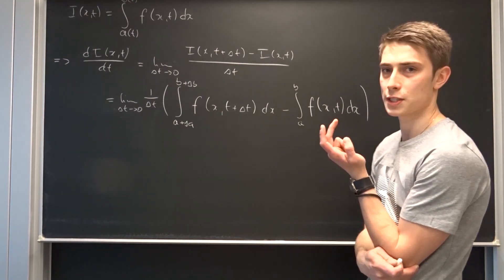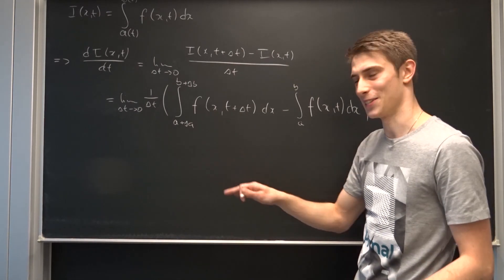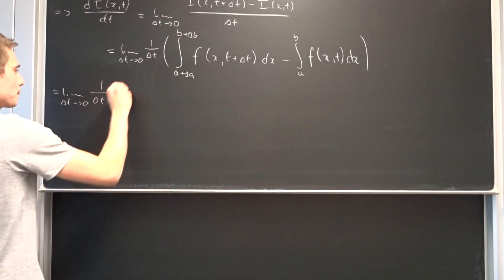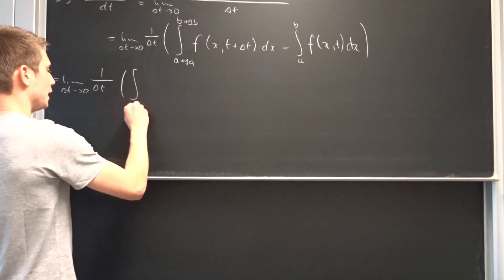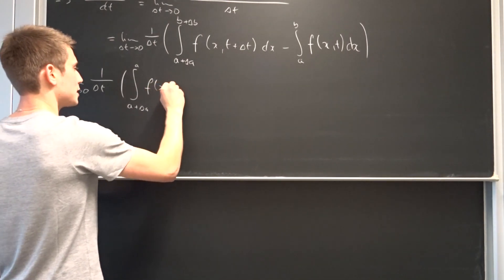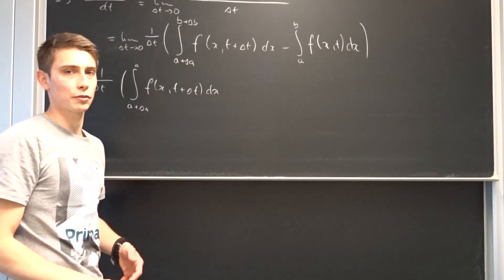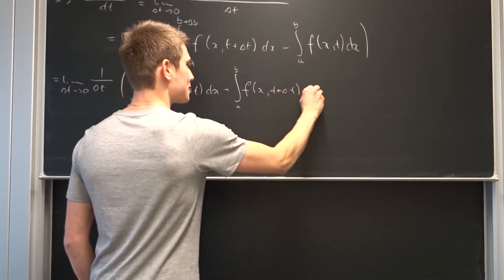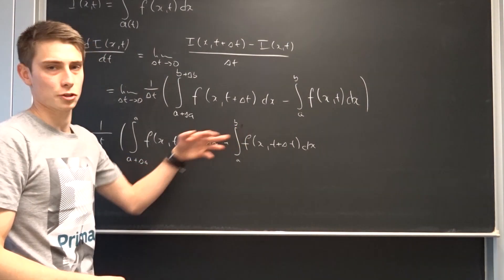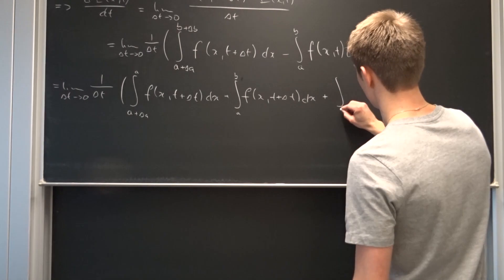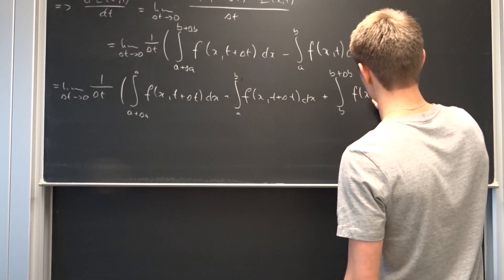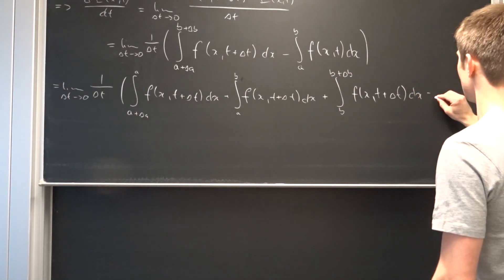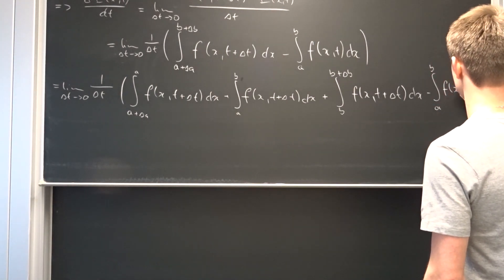In the next step we are going to use the linearity of the integral, so we can split this integral up. We've got the limit as delta t approaches zero of 1 over delta t. The first integral goes from a plus delta a to a of f in terms of x and t plus delta t, times dx. The next one goes from a to b: plus the integral from a to b of f in terms of x and t plus delta t, times dx. And the last integral goes from b to b plus delta b: plus the integral from b to b plus delta b of f in terms of x and t plus delta t, times dx. And also we have to subtract minus the integral from a to b of f in terms of x and t, times dx.